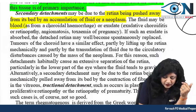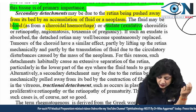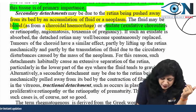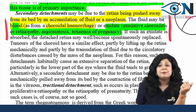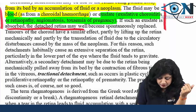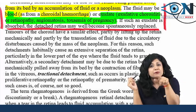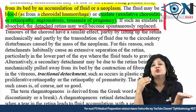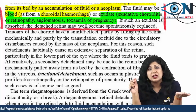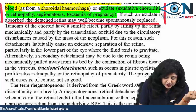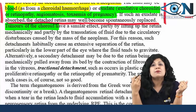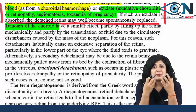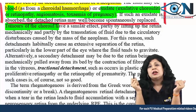The fluid in exudative RD can be blood in choroidal hemorrhage, exudate in exudative choroiditis, or from conditions like angiomatosis or eclamptic retinopathy in toxemia of pregnancy. If such exudates are absorbed, the detached retina may spontaneously replace itself — treatment of the cause alone is required. One of the most important causes of exudative RD is malignant melanoma of the choroid, which pushes the retina in a convex shape.